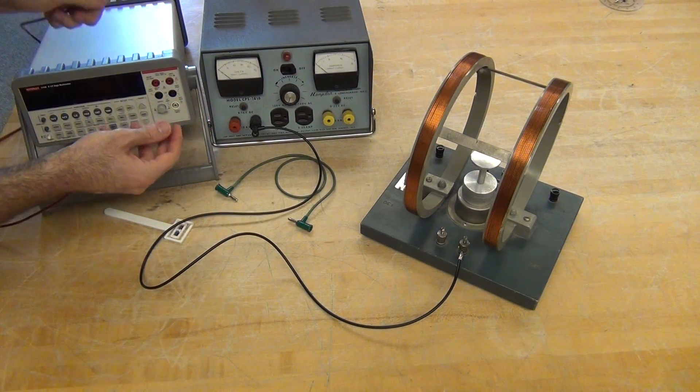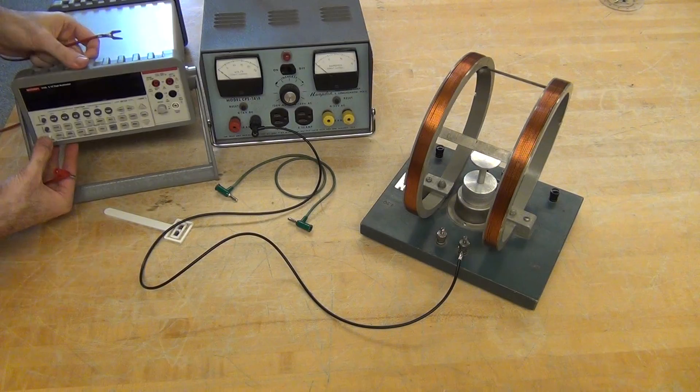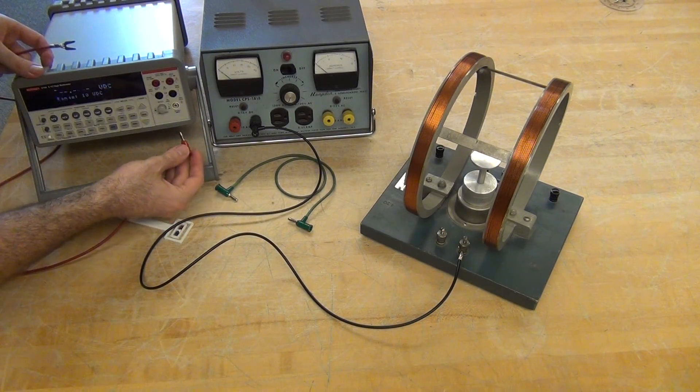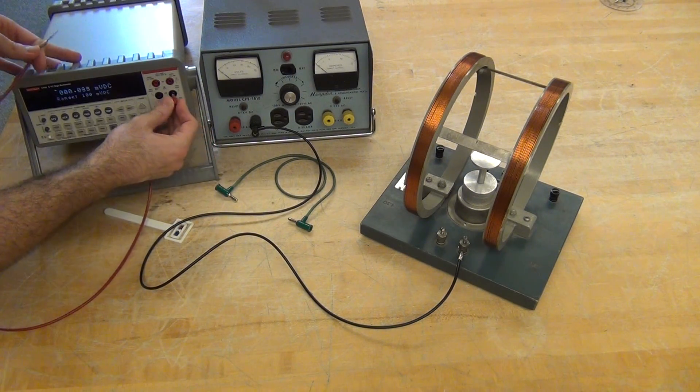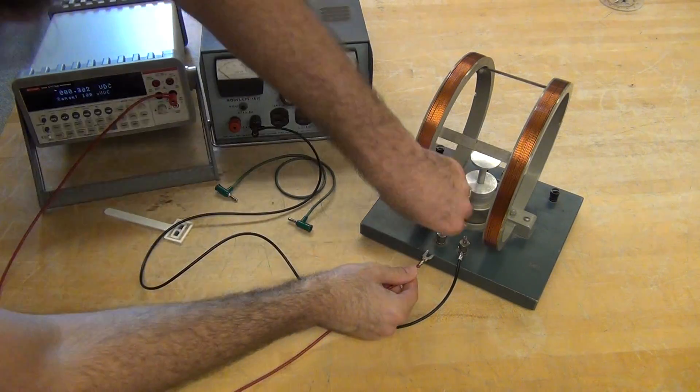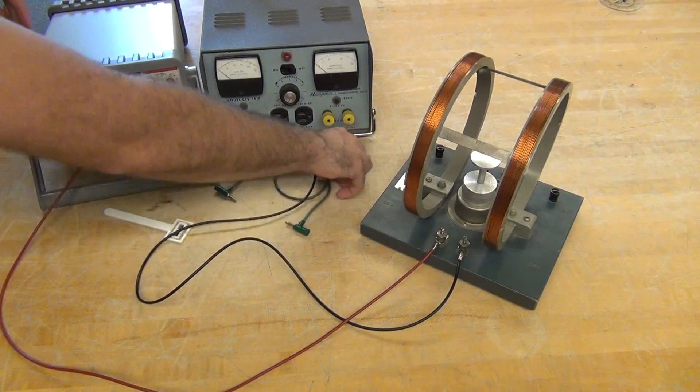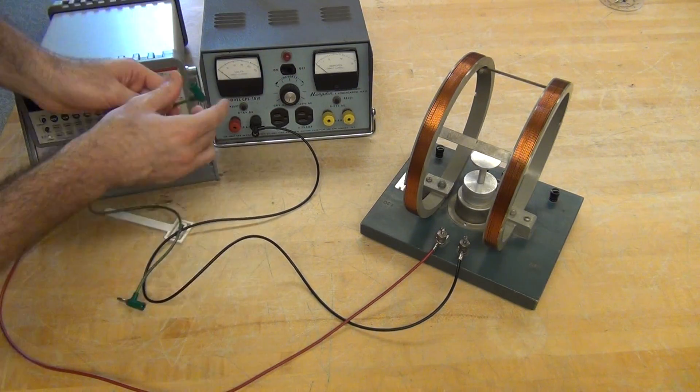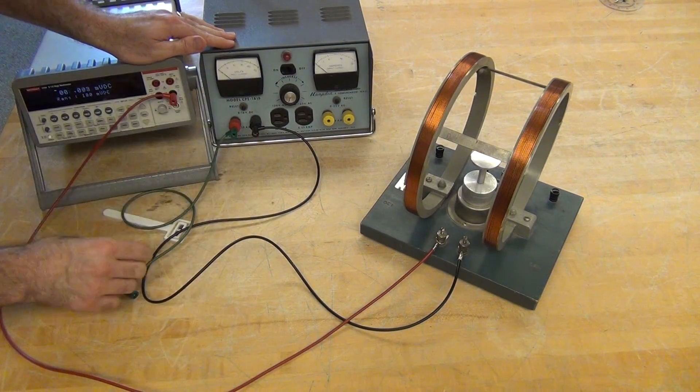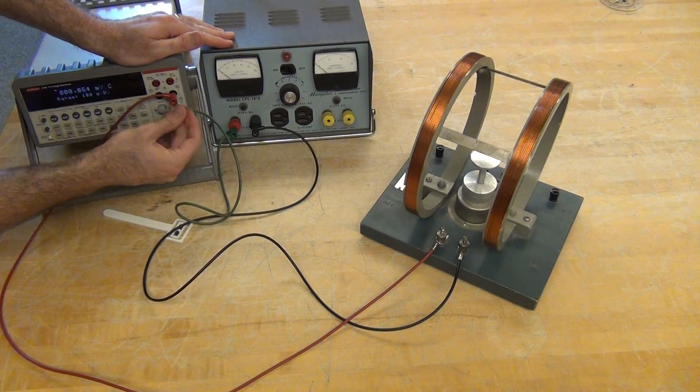I want to measure how much current I'm sending through so I'll use a Keithley. Go ahead and turn that on, connect through the black to a spade there and then to complete the circuit, I'll run from the red to the white common here.